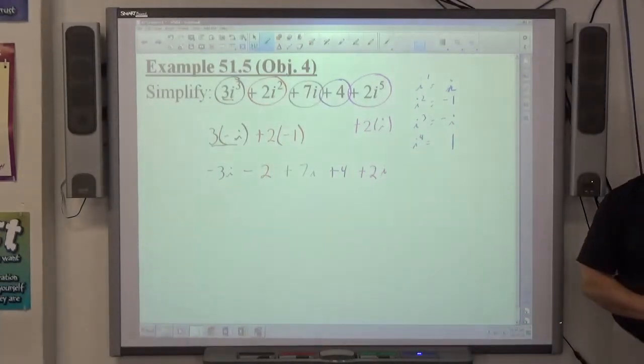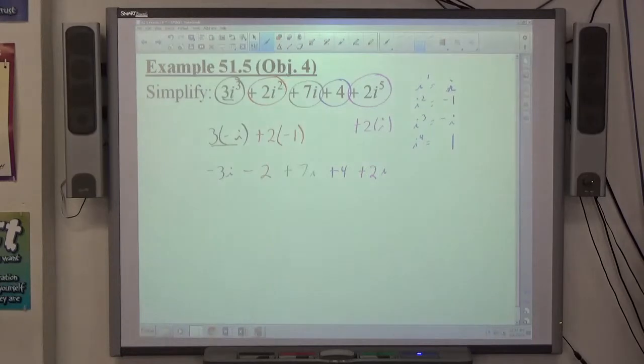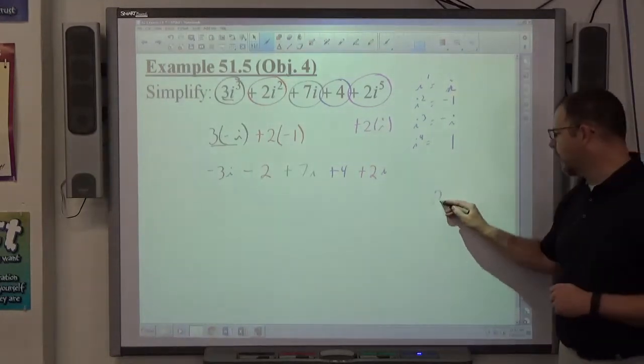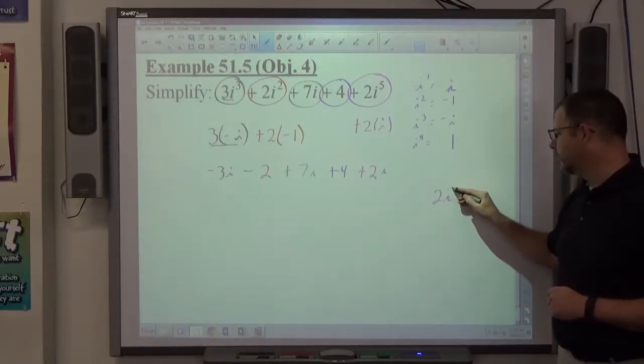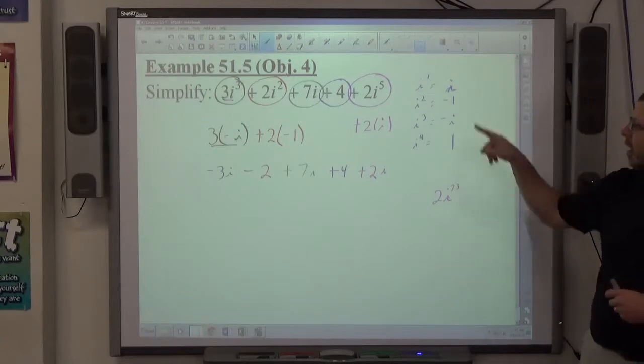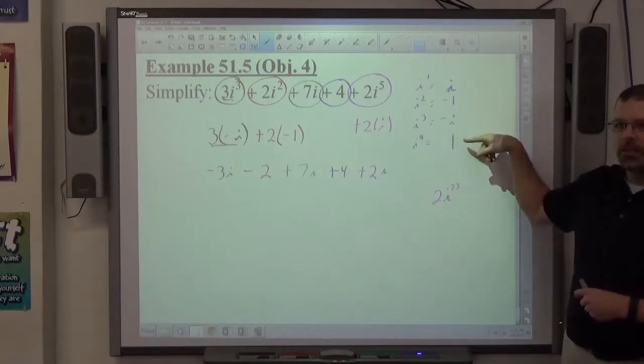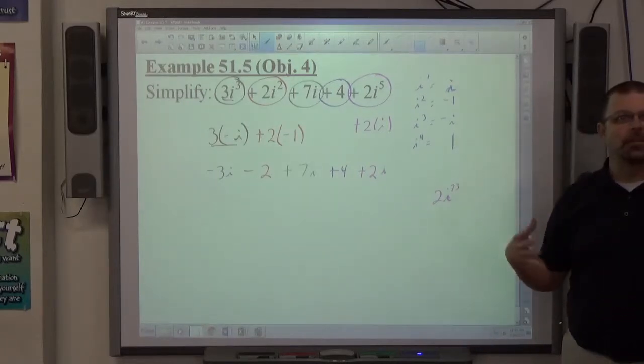They might give you 2i to the 73rd power. Okay, let's just imagine that, 2i to the 73rd power. And you start counting 1, 2, 3, 4, 5, 6, 7, 8, 9, 10, 11, 12, and that seems like, well that's going to take a little while, but that's doable.